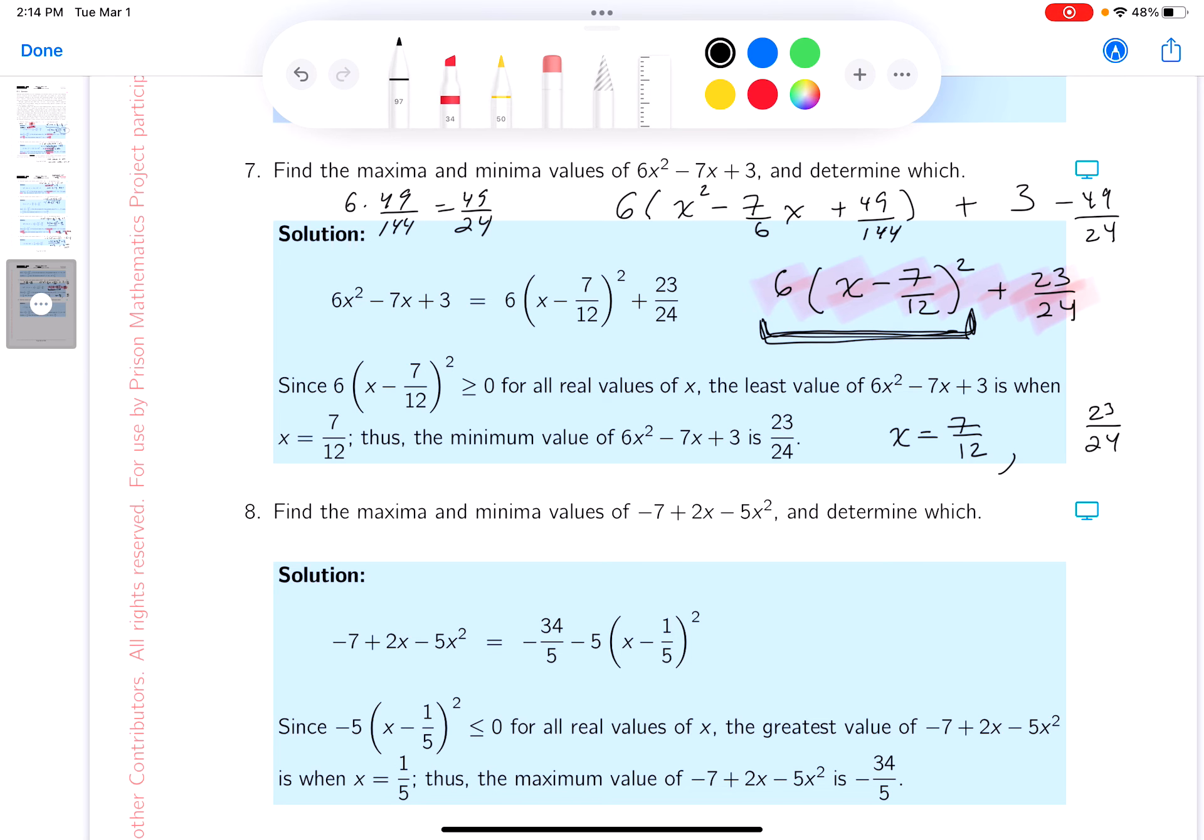Well, I hope you realize the smallest this could be is 0, and that occurs at 7 twelfths. But after that, it's going to be a positive number. And a positive plus 23 24ths, the number gets bigger and bigger. So this has to be a minimum.